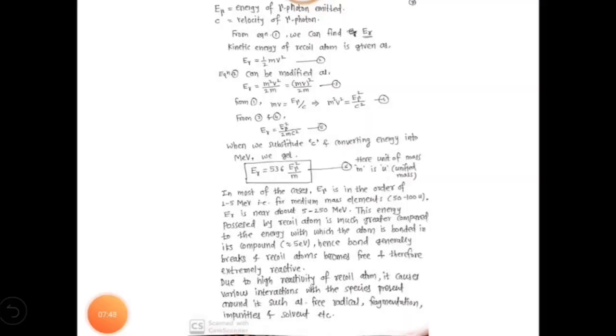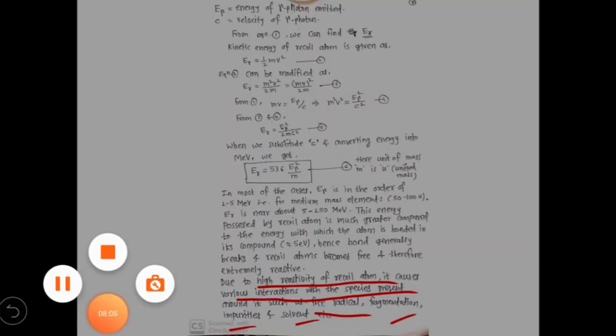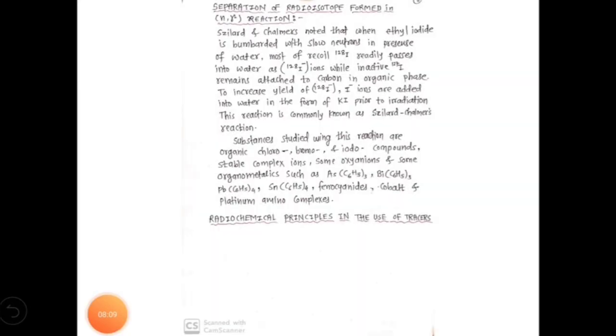Due to high reactivity of recoil atom, it causes various interactions with species present around it—species such as radical fragments, impurities, solvent—can be affected by these recoil atoms as they possess much higher energy. Now, as we have seen how n-gamma reaction takes place and how they convert a nucleus into the radioactive isotope having one unit mass more than the parent one, the next point is: separation of this radioisotope formed in n-gamma reaction.